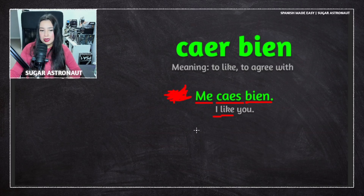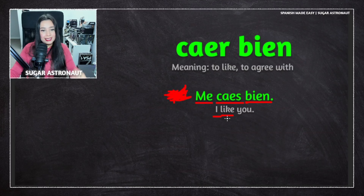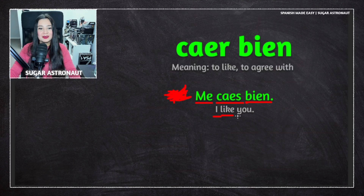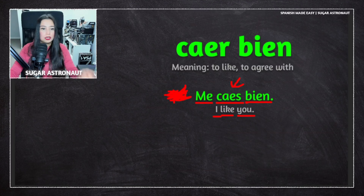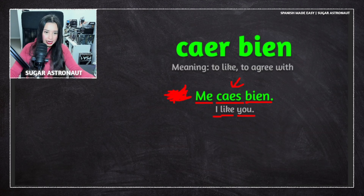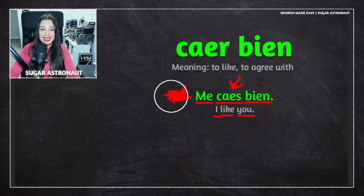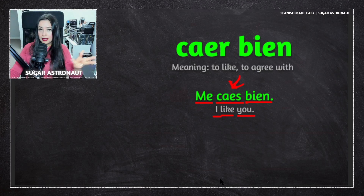Most of the time you will not hear 'tú me caes bien' — some Spanish speakers might say it, but most will just say 'me caes bien.' Tú is there but not visible or audible. We know we're talking about 'you' because of the conjugation of the verb caer: tú caes. So the conjugation gives it away.